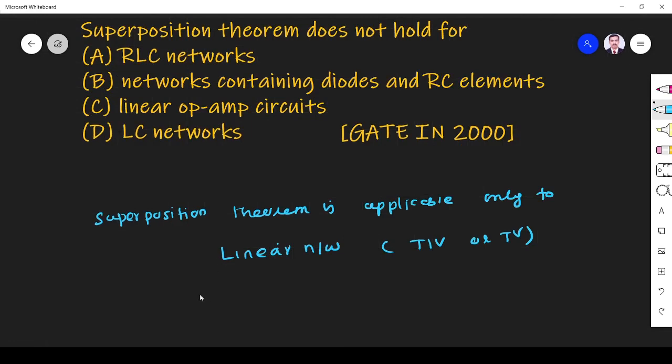The network may comprise independent sources or linear dependent sources.